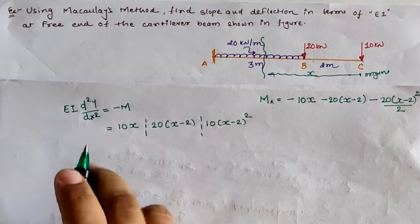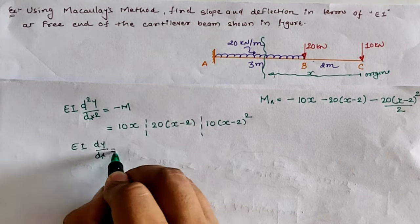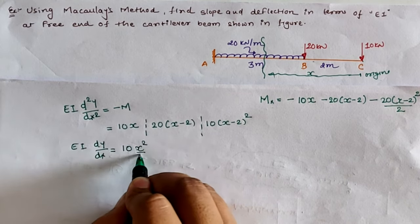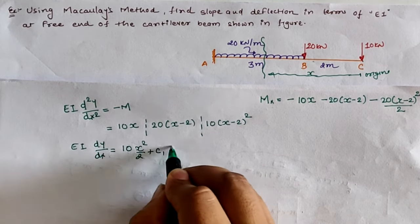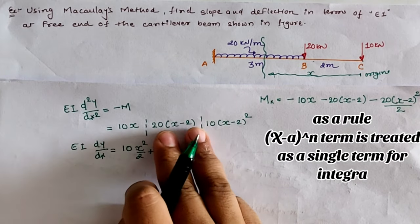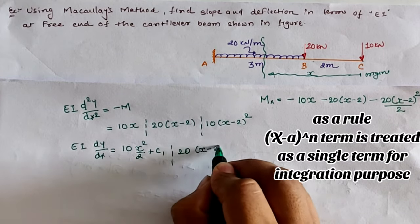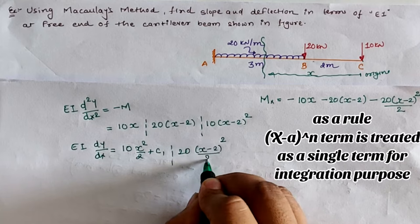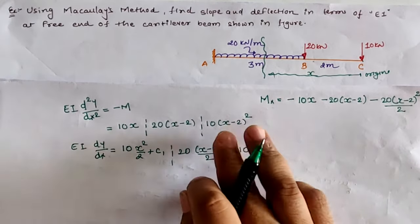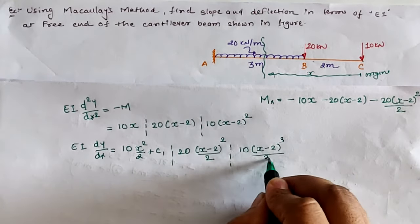Now integrating first, we will have EI into slope dy/dx which is 10x integrated as x squared by 2 plus constant C1. For the 20(x minus 2) term, we have to consider the whole term as a single term according to Macaulay's method, so the integration is (x minus 2) squared divided by 2. The rest value is 10 times (x minus 2) squared, integrated as (x minus 2) cubed divided by 3.